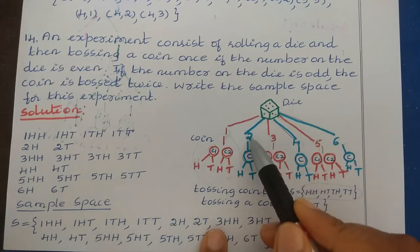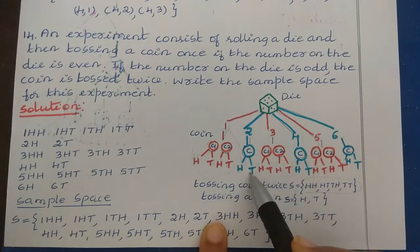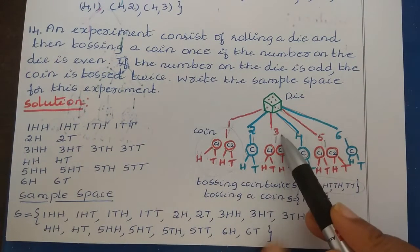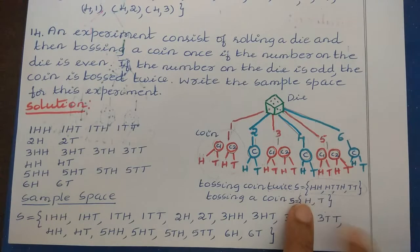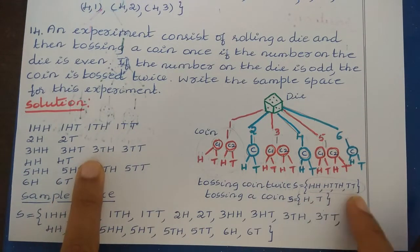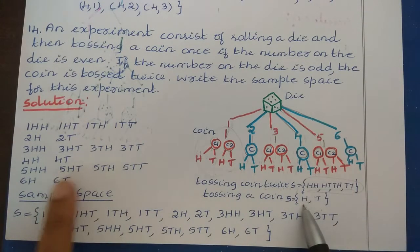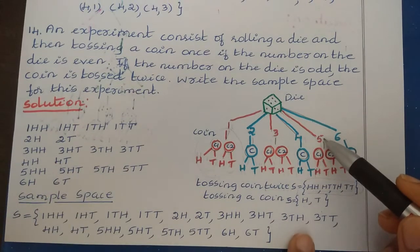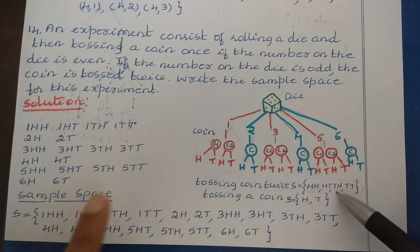If we get number 2, which is even, we toss a coin once, giving outcomes H and T. So we have (2,H) and (2,T). Next, 3 is odd, so we toss a coin twice: (3,HH), (3,HT), (3,TH), (3,TT). Then 4 is even, so we toss once: (4,H) and (4,T). Number 5 is odd, so we toss a coin twice: (5,HH), (5,HT), (5,TH), (5,TT).